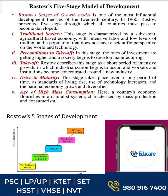The first stage is Traditional Society. This stage is characterized by a subsistence agriculture-based economy, with intensive labor and a low level of trading, and a population that does not have a scientific perspective on the world and technology.